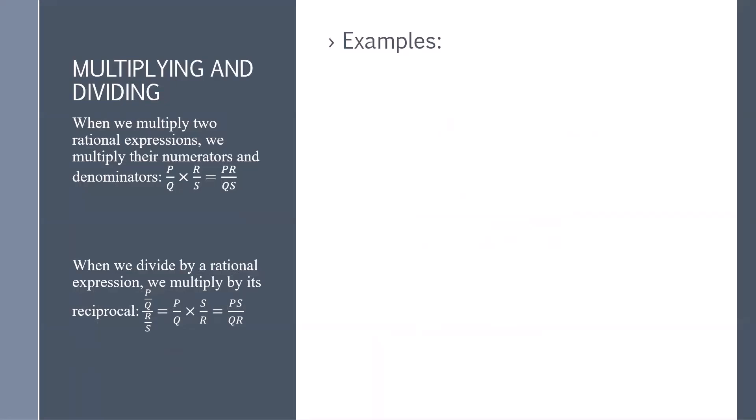When we divide by a rational expression, we simply flip the denominator and multiply. So p over q divided by r over s is really p over q times s over r, or ps divided by qr.